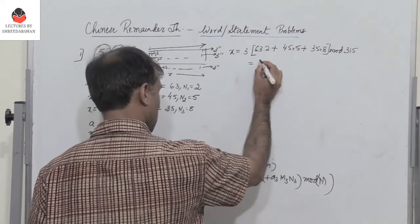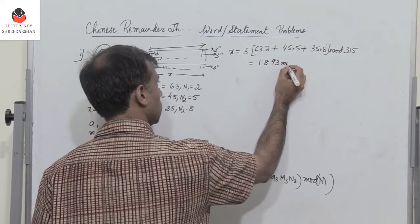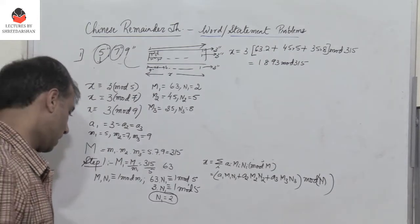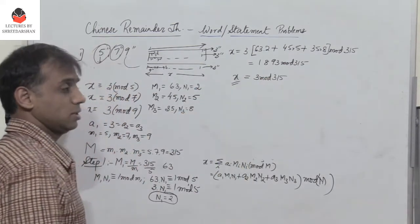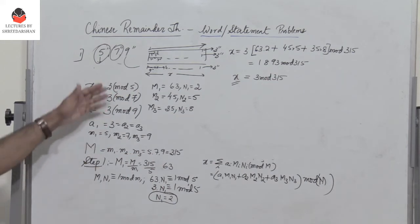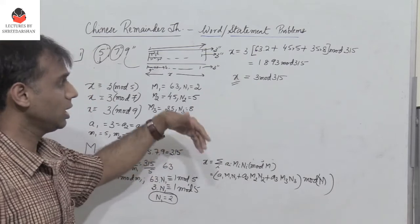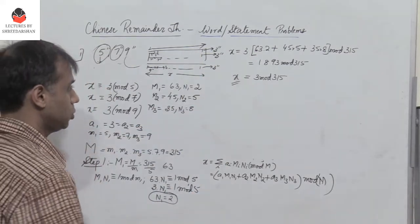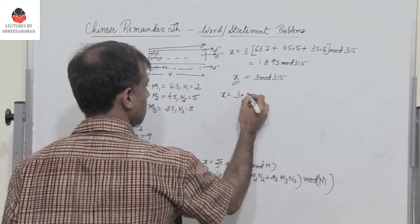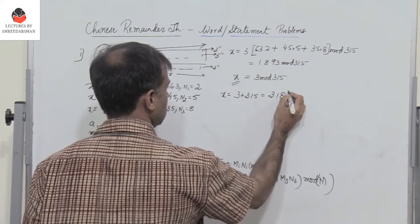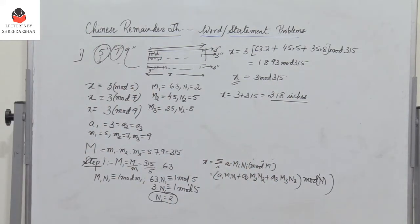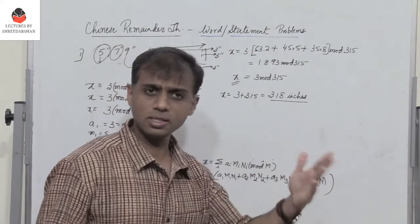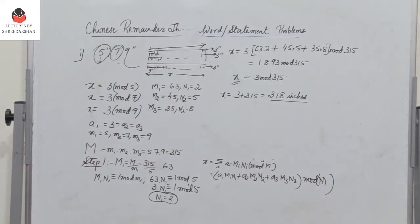1893 mod 315 gives a value of 3. So X = 3 is the smallest value, but the length of the room cannot be 3 inches. The next value is obtained by adding 315 to 3: the length of the room is 3 + 315 = 318 inches. You can convert this to feet or any required unit. That is how we solve this statement problem.